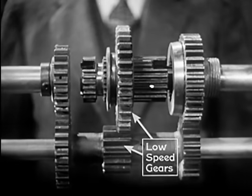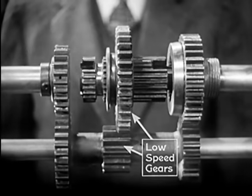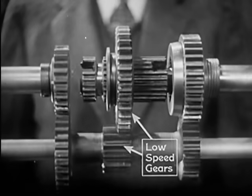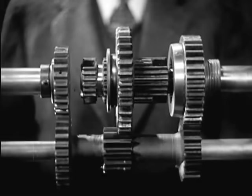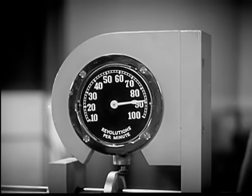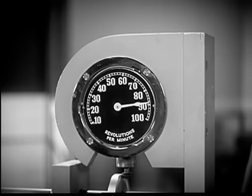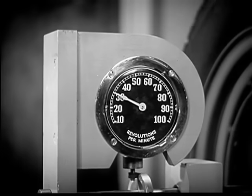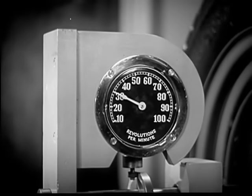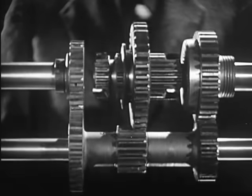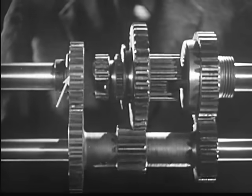So, in low speed, we get the greatest leverage by letting the smallest gear on the counter shaft turn the largest gear on the drive shaft. The engine on this model is running at a constant speed of 90 revolutions a minute. With low gears in mesh, the rear wheel is turning at 30 revolutions a minute, about a third the speed of the engine, but with three times the force. The power is going through these gears in the transmission.